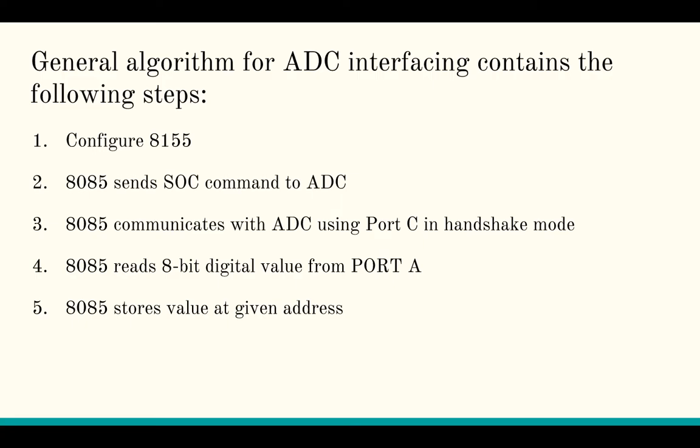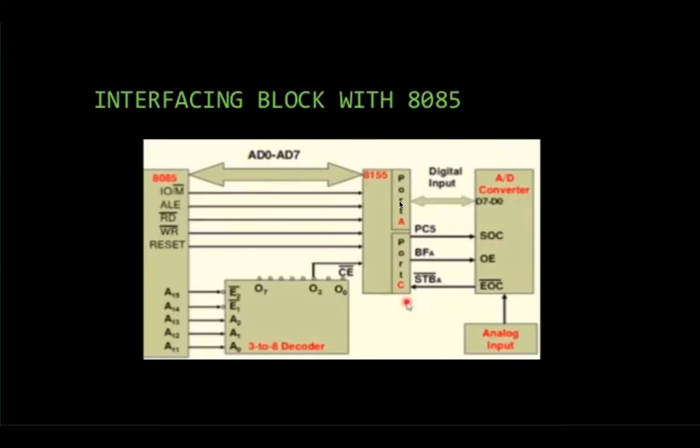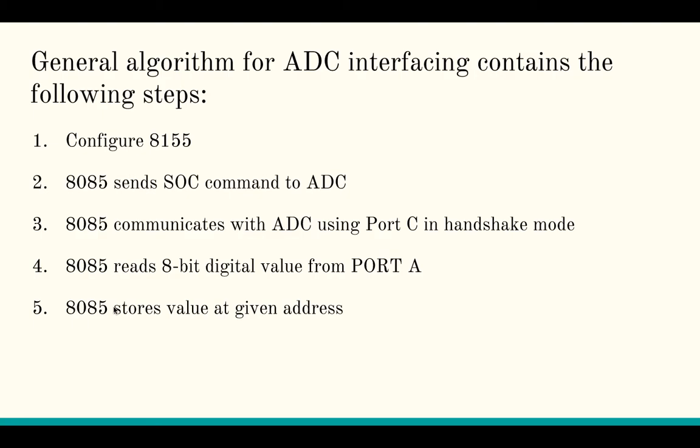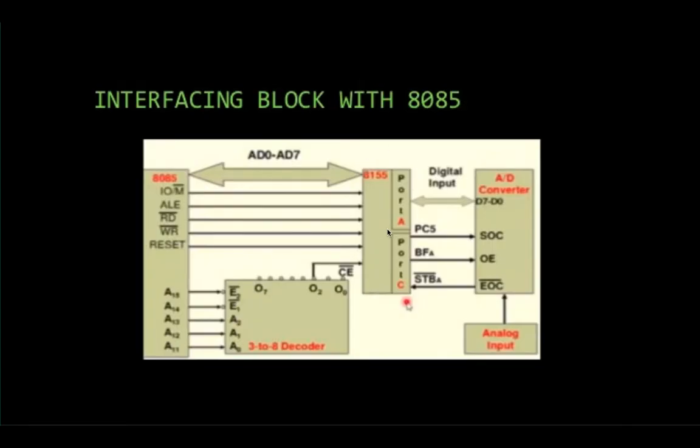Here we have the general algorithm for ADC interfacing. We first configure the 8155 or the 8255 in the experiment's case. The 8085 sends SOC command to ADC. 8085 communicates with ADC using port C in handshake mode. 8085 reads the 8-bit digital data from the port A, and 8085 then stores the value at the given address. After 8155 reads the data from the ADC, it transfers the data to 8085 where we store it.